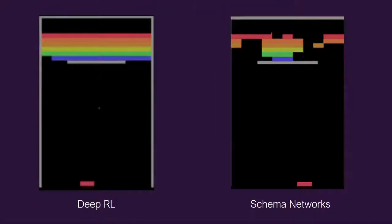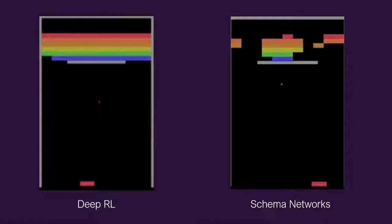And similarly, if you introduce a wall in the middle, just like that frog which keeps going on the bugs, the deep RL system would keep bouncing on that wall, whereas our system would plan to play it around the wall. These are characteristics of human intelligence.